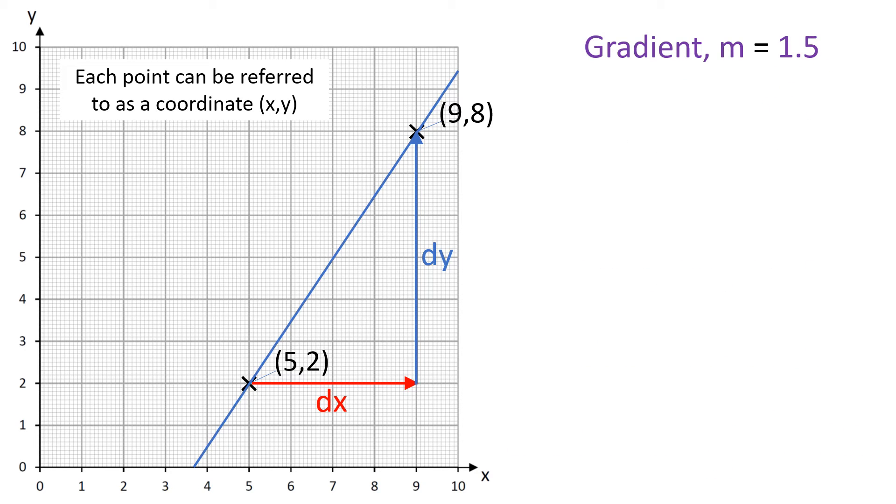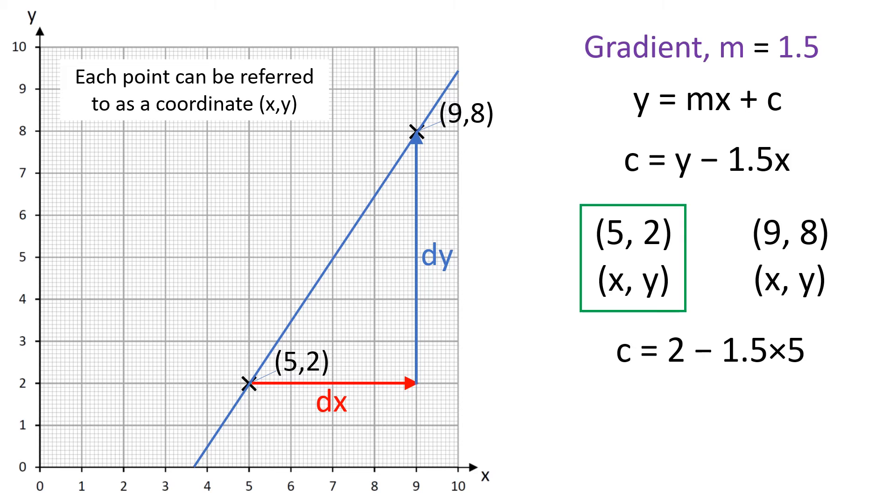Now that we have the gradient equals 1.5, we need to think about the intercept. We have the equation y equals mx plus c. If we rearrange this we have c equals y minus mx. We can substitute in for m. We know that m is 1.5, so we have c equals y minus 1.5x. We also have these two points and we're going to select one of these points where x equals 5, y equals 2, and put those values into that equation.